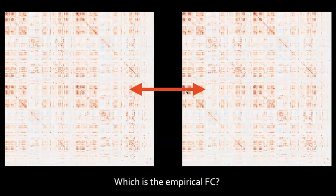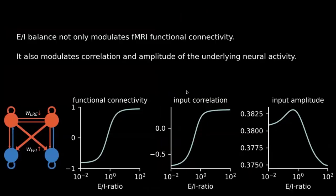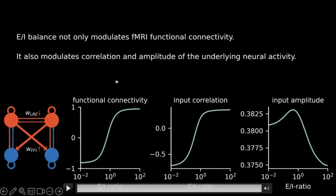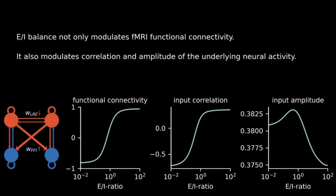Not only the state of synchrony, but also other aspects of the brain system are modulated by excitation-inhibition balance — for example, the fMRI signal becomes more correlated if we increase long-range excitation, and also the input currents flowing into every population of neurons become more correlated. For the input amplitude we see a nonlinear pattern. We used this to explain the different intelligence behaviors of our group of 650 subjects from whom we had brain models and intelligence tests.